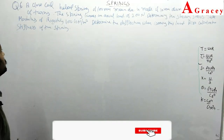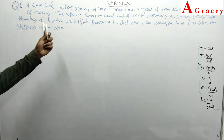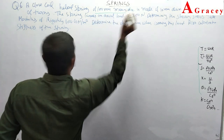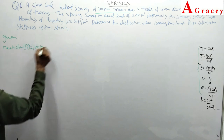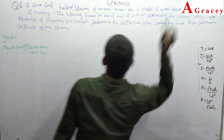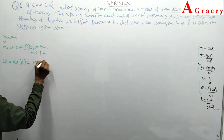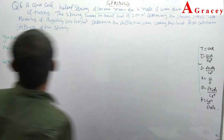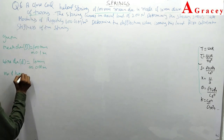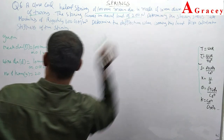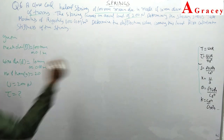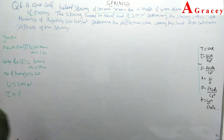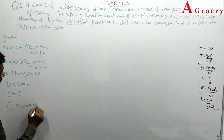Question 6: a closed coil helical spring has mean diameter D = 100 mm = 0.1 m, wire diameter d = 10 mm = 0.01 m, 20 number of turns n = 20. The spring carries an axial load W = 200 newton. Determine the shearing stress, the deflection, and the stiffness of the spring. Modulus of rigidity C = 100 GN/m².